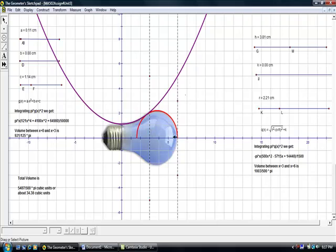And to get the rest of the light bulb between x equals 3 and x equals 6, the volume is 1803 over 500 π. And then you just combine the two—that gets our total volume. And in this case, we get approximately 34.38 cubic units.